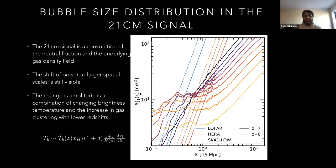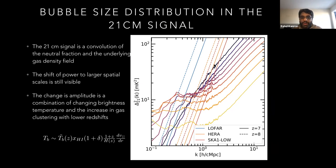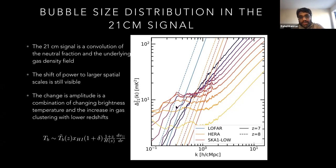In a more quantitative manner, this is the evolution of the 21-centimeter power spectrum as a function of redshift and ionization fraction. Darker colors are higher redshift and lower ionization; lighter colors are lower redshift and higher ionization. On top I plot the sensitivity limits of LOFAR, HERA, and SKA at different redshifts. You can see that these instruments have enough sensitivity to measure this signal almost all throughout the ionization epoch, so we should expect a measurement soon.